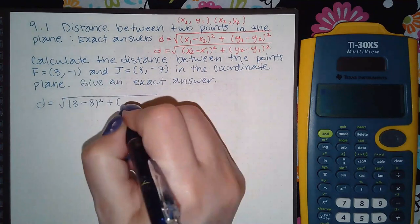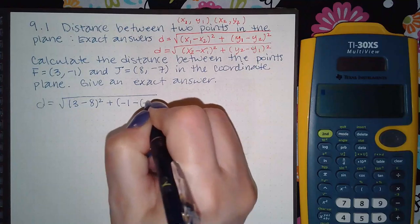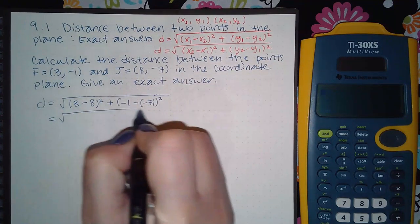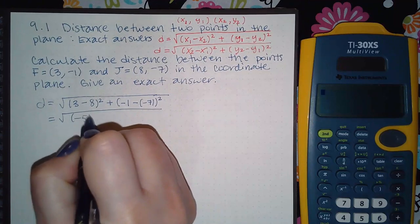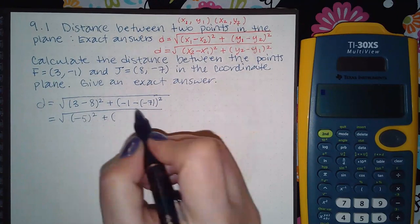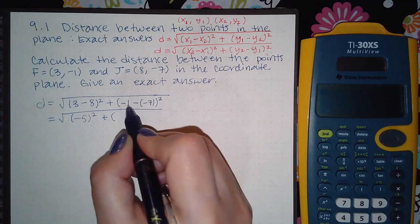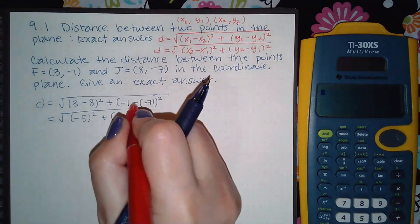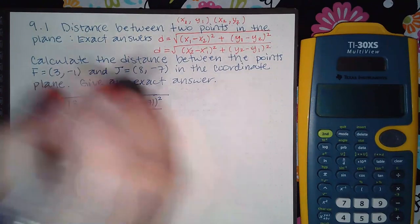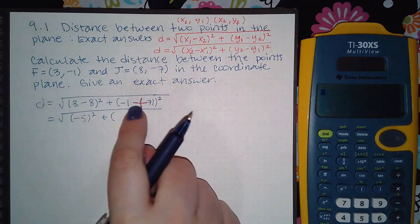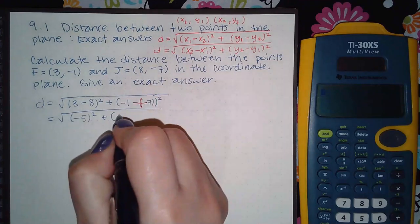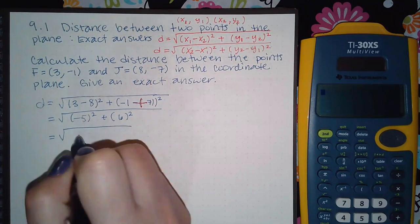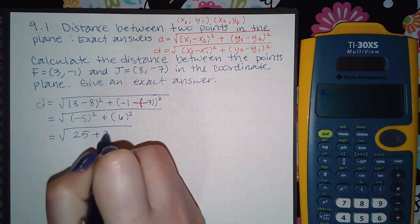We're going to take the x values together, so I'm going to do 3 minus 8 squared plus the y values negative 1 minus negative 7 squared. I'm going to have negative 5 squared here, and this is going to turn to plus so negative 1 plus 7 is going to be positive 6. When I square each of these numbers, I'm going to get 25 plus 36.